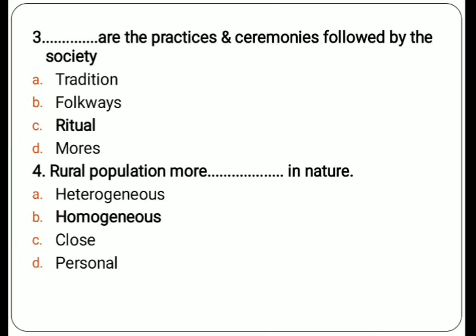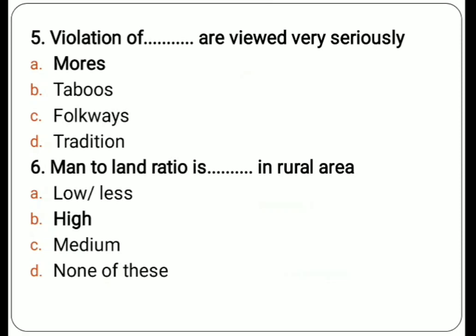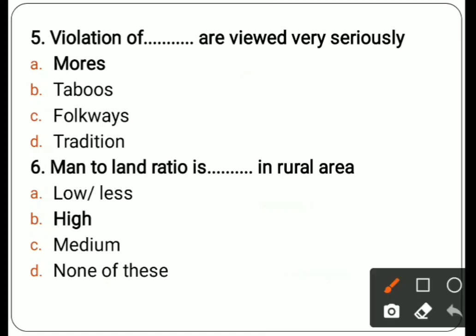Fifth question: violations of dash dash are viewed very seriously. Options are folkways, mores, taboos, traditions. The correct answer is mores. Examples of mores include saluting the flag or standing during the national anthem — these are essential customs, and not following them results in punishment.